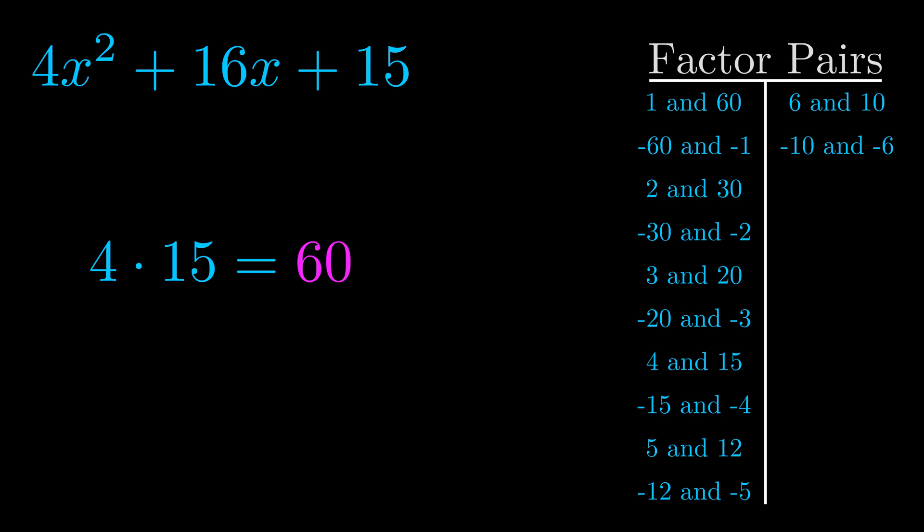The b value is the coefficient on the x term. That's the middle term, the one that we haven't done anything with yet. And really this is the only factor pair that we need.